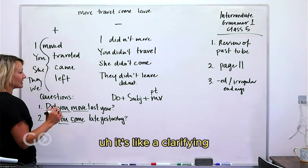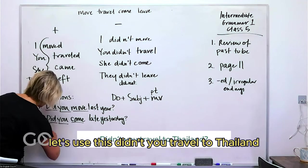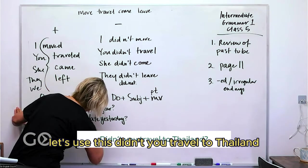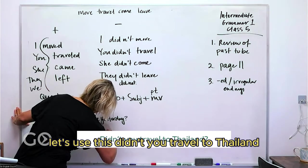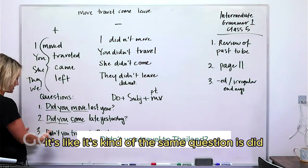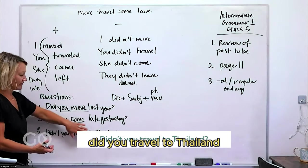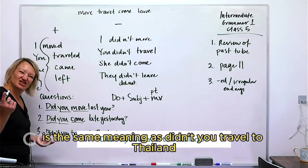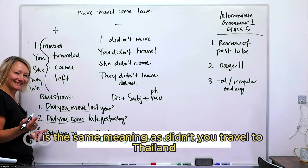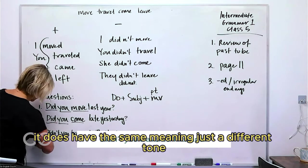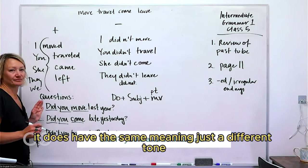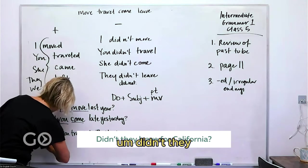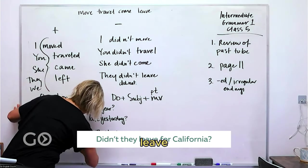Let's use this: didn't you travel to Thailand? Didn't you—it's kind of the same question. Did you travel to Thailand is the same meaning as didn't you travel to Thailand? It's got kind of the same meaning, just a different tone. Didn't they leave for California?